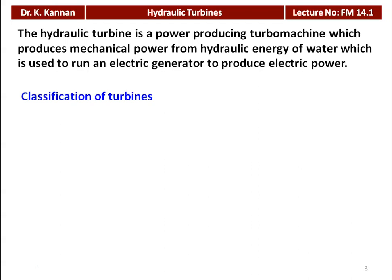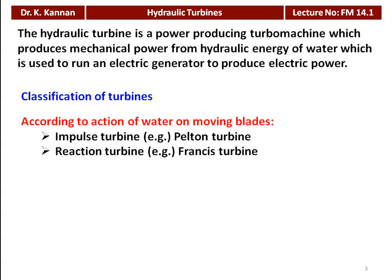We classify the turbine based on different parameters. The first classification is based on the action of water on the moving blade. This may be an impulse turbine or a reaction turbine. The example for an impulse turbine is the Pelton turbine and for a reaction turbine it is the Francis turbine.